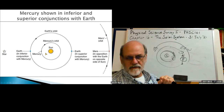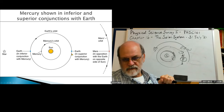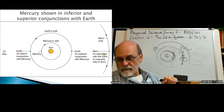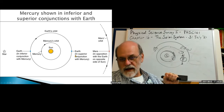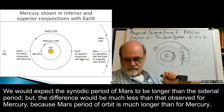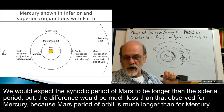Earth is in inferior conjunction with Mercury when both are on the same side of the sun, and in superior conjunction when they're on opposite sides. Mars is in opposition when on the opposite side of the sun from Earth. Mars's orbit moves slower while Mercury's moves faster, but Earth is always moving too.